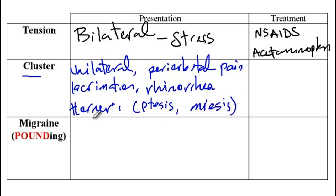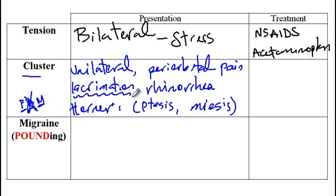If you recall, Horner's presents with a triad of PAM — PAM is the mnemonic. It presents with ptosis, anhydrosis, as well as miosis. So these cluster headache patients do not have anhydrosis; in fact, they do have excess lacrimation, but they do present with ptosis and miosis.